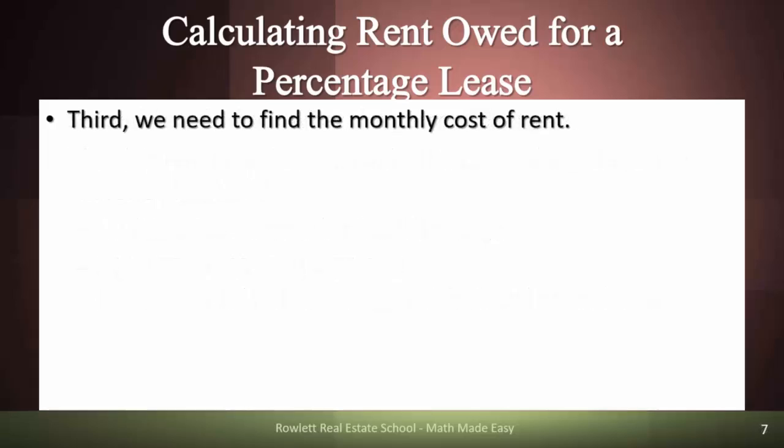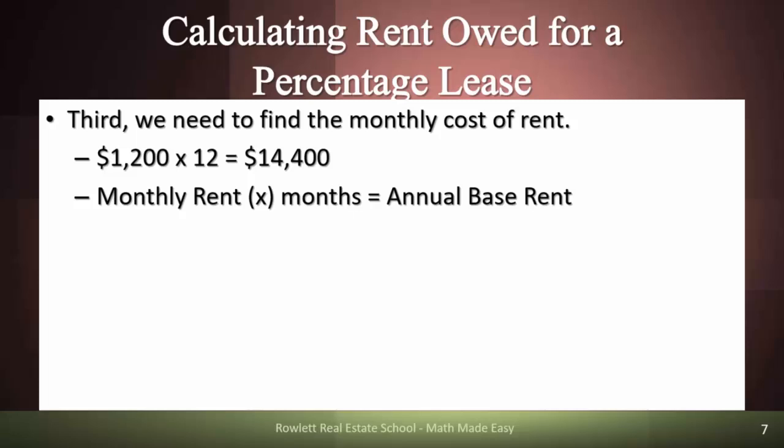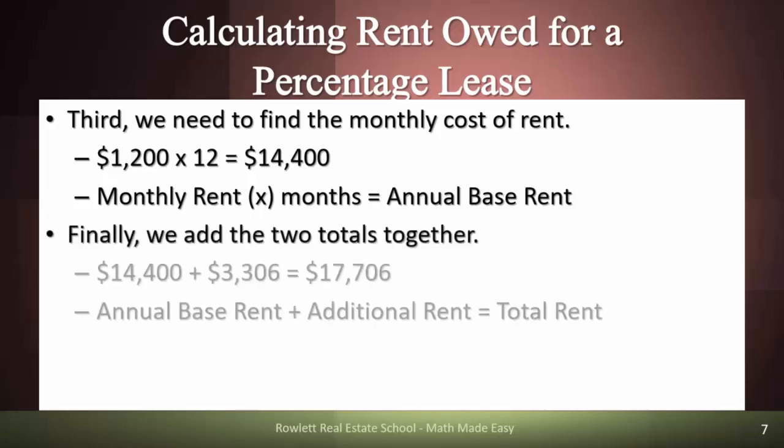To find the grand total, we take $1,200 per month for 12 months in a year and multiply those together, which comes to $14,400. Then we simply add them together: $14,400 plus $3,306 gives us $17,706 as the total rent at the end of the year.